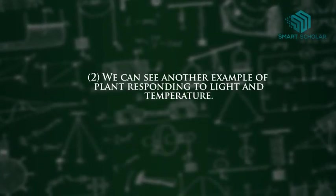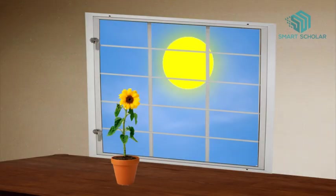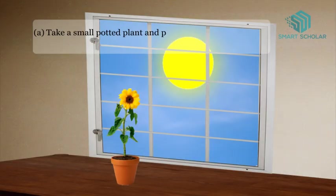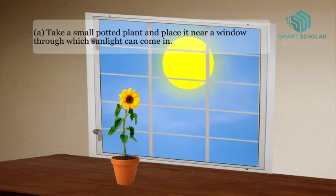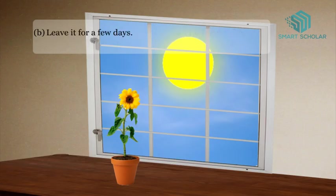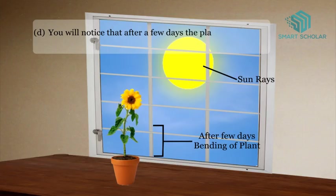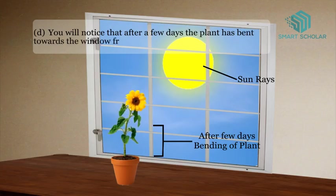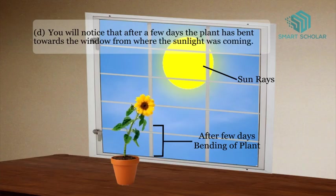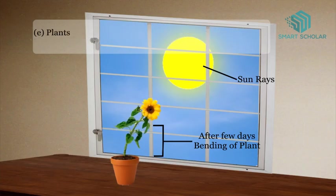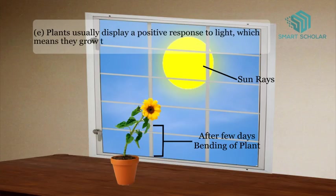We can see another example of a plant responding to light and temperature. Take a small potted plant and place it near a window through which sunlight can come in. Leave it for a few days. You will notice that after a few days, the plant has bent towards the window from where the sunlight was coming. Plants usually display a positive response to light, which means they grow towards a light source.